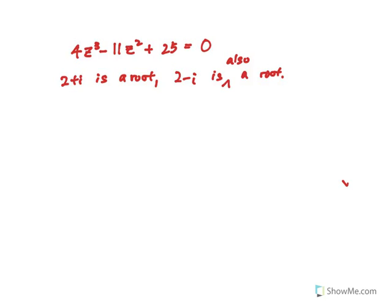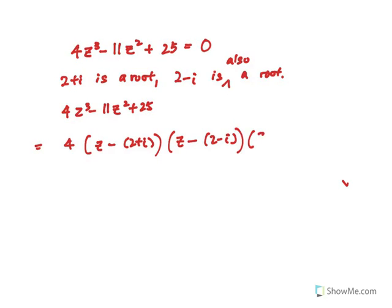So with that, 4z cubed minus 11z squared plus 25 can be written in this manner: 4z with the first root, and the second root, and the last root, I'm just going to call it a because I don't know what it is. Goes to 0.